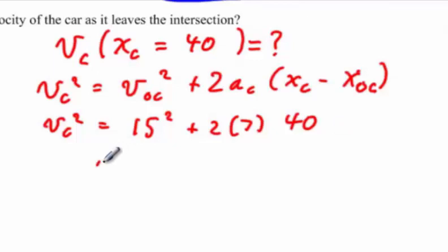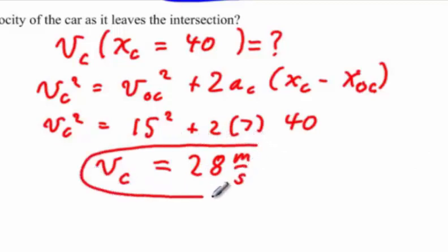However, since the car will clearly be traveling to the right as it exits the intersection, we take the plus version of the square root, and the resulting velocity is 28 meters per second. Significantly faster than the initial velocity, so perhaps Bo could have made the intersection without hitting the gas quite so hard.